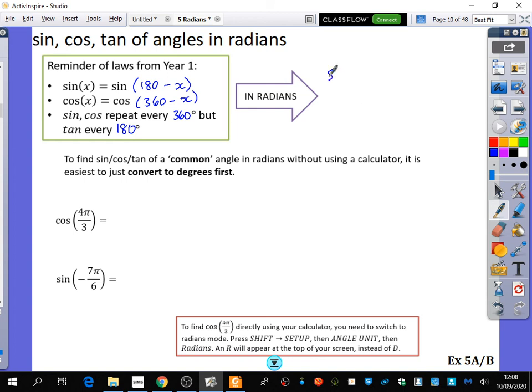So sine of x is going to be the same as the sine of (π - x), because 180 is π. So our other one is now going to be that cos x is the same as cos of (2π - x). So sine and cos repeat every 2π, and tan repeats every π. So it's the same, just with radians.